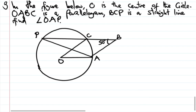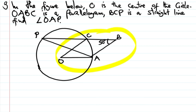In the figure below, O is the center of a circle and ABC is a diagram. We need to find angle OAP, where a given line is straight. The diagram involves a circle with center O, and we are working with angle values to find the required angle.